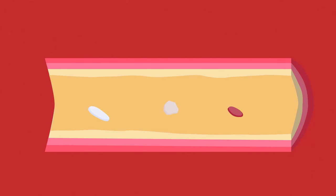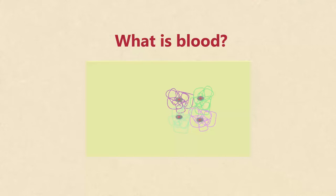You should already know that blood consists of red blood cells, white blood cells, platelets and plasma. But if you have forgotten, watch our what is blood video first.